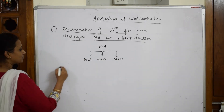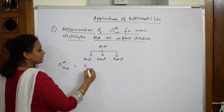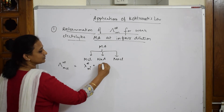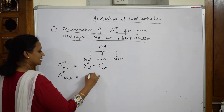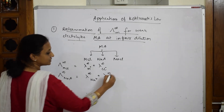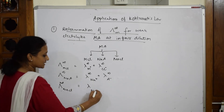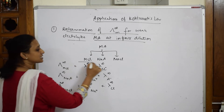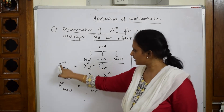Write the ionic contributions for each salt. For MCl at infinite dilution: λ_m∞(MCl) = λ∞(M⁺) + λ∞(Cl⁻). For NaA: λ_m∞(NaA) = λ∞(Na⁺) + λ∞(A⁻). For NaCl: λ_m∞(NaCl) = λ∞(Na⁺) + λ∞(Cl⁻). Now add the first two expressions and subtract the third.